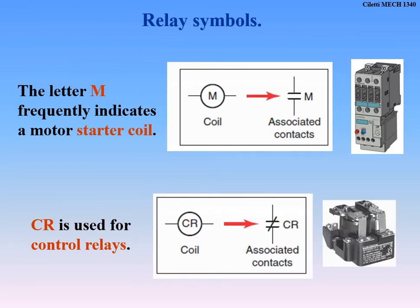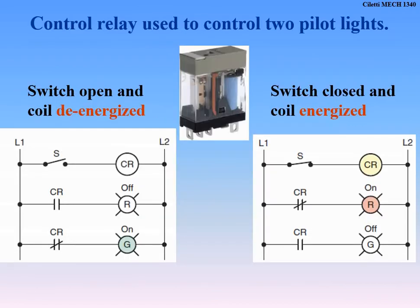In relay symbols, a circle shows up on our ladder logic. A circle with an M in it is a motor contactor or motor starter coil — though in Siemens it's a memory coil. CR stands for control relay, used for controls and different relays. These are the output coils on the right-hand side of the ladder logic. Normally open and normally closed contactors energize and de-energize to open and close things on the other end.